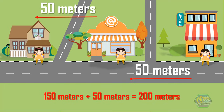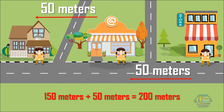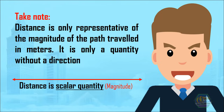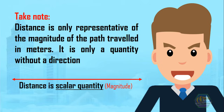This path length is basically the length of the path. Path length is also known as distance, with the unit meter. Take note that distance is only representative of the magnitude of the path traveled in meters. It is only a quantity without a direction. Hence, distance is a scalar quantity.